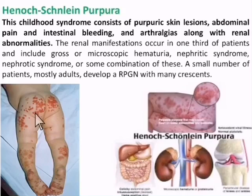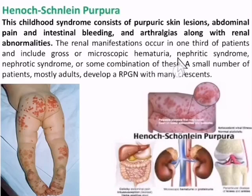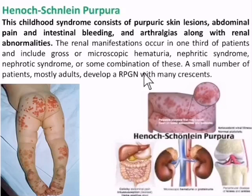Our topic is renal involvement. In the kidneys, these patients develop gross or microscopical hematuria, nephritic syndrome, nephrotic syndrome, or a combination of both. A small number of patients, mostly adults, develop rapidly progressive glomerulonephritis with many crescents.